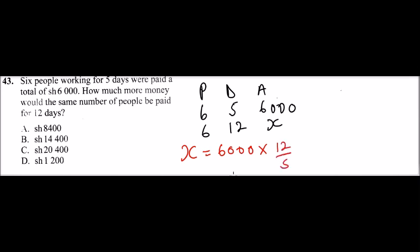Multiplied by the number of people remaining the same, that is the same as multiplying by one. Here you can divide by five, you get 1200.